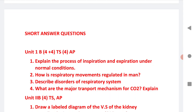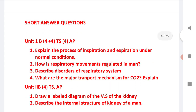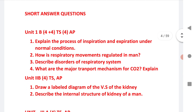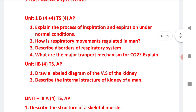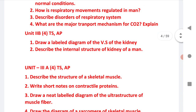SEQs Unit 1B: for TS it is 4 plus 4 marks, for AP it is only 4 marks. The four questions given — describe the process of inspiration and expiration under normal conditions. Next, a very important question: how is respiratory movement regulated in man? Describe the disorders of the respiratory system, and what are the major transport mechanisms for CO2? Explain.